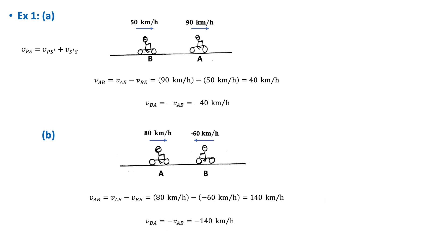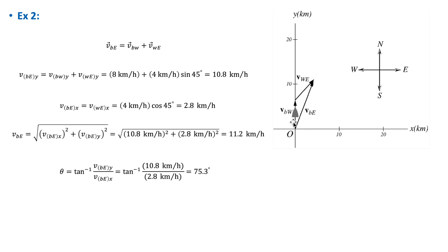For example two, a boat is traveling north at 8 km/h relative to the sea's waves, and the waves are traveling north-east relative to the earth at a constant speed of 4 km/h. We want to find the velocity of the boat relative to earth. Using the Galilean transformation in vector form, with S as the earth, S' as the frame of the waves, and P as the boat: V_BE equals V_BW plus V_WE, where V_BW is the velocity of the boat relative to the waves and V_WE is the velocity of the waves relative to earth.